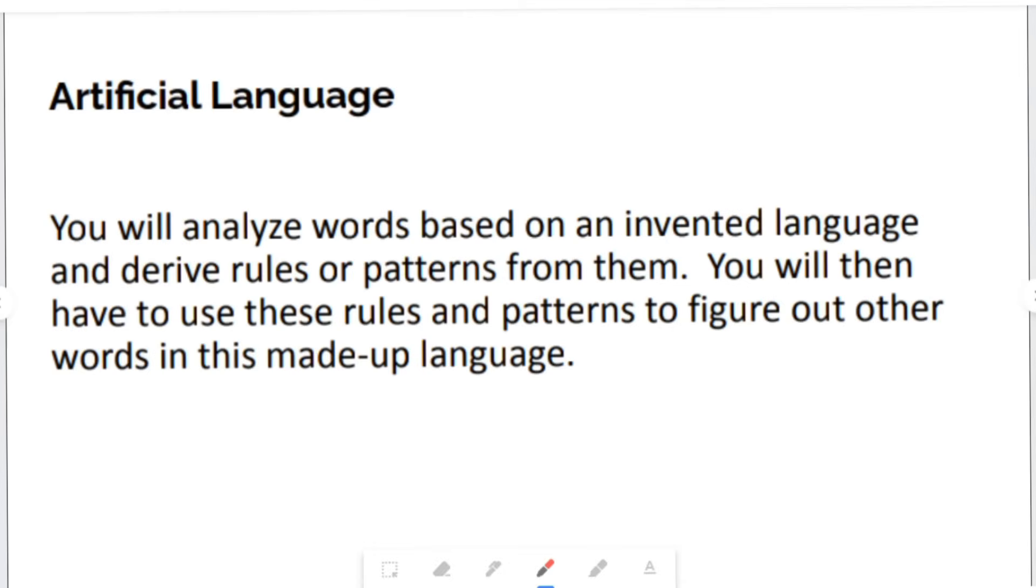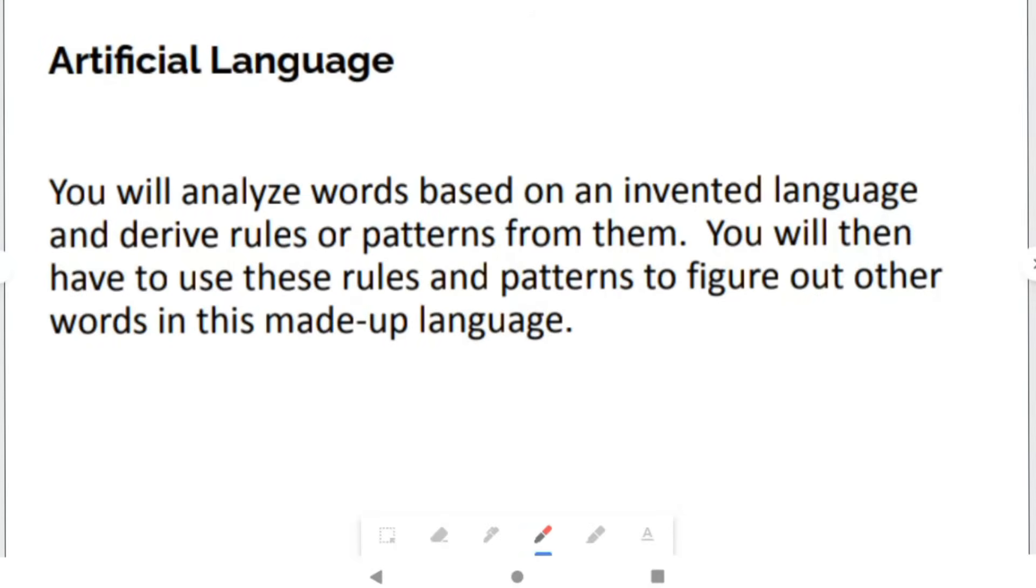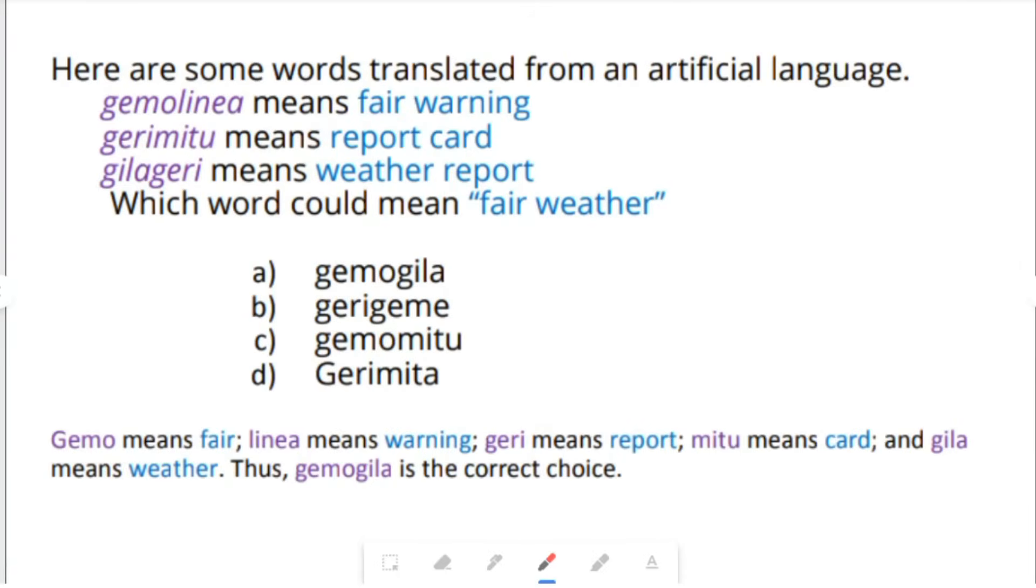Artificial language. You will analyze words based on an invented language and derive rules or patterns from them. You will then have to use these rules and patterns to figure out the other words in this made-up language. Here are some words translated from an artificial language. Gimolinia means fear warning. Giri mitu means report card. Gila giri means weather report. Which word could mean fair weather? If Gimo means fair and linear means warning, Giri means report, mitu means card, and Gila means weather. Thus, Gimo gila is the correct choice.